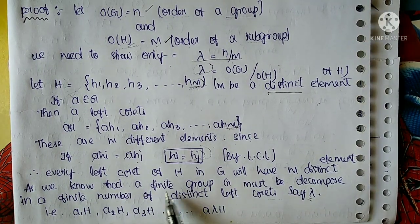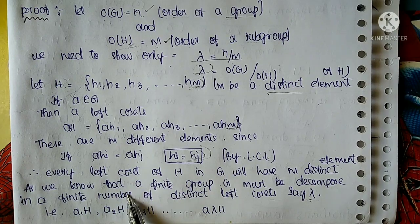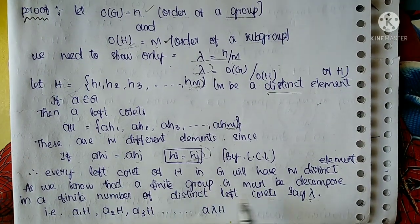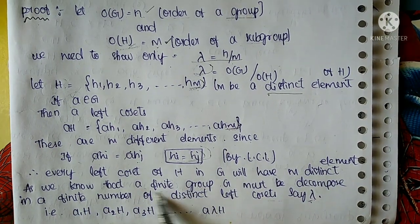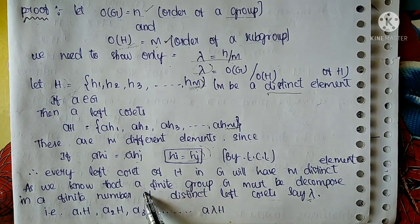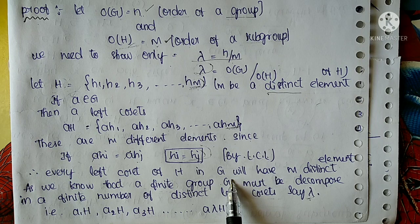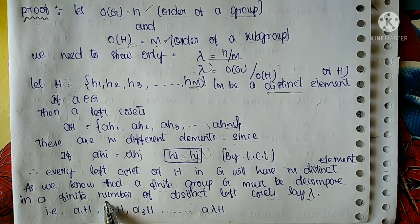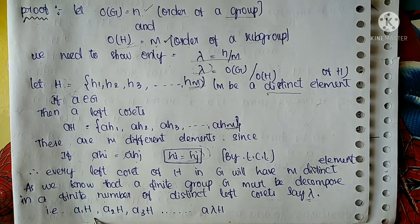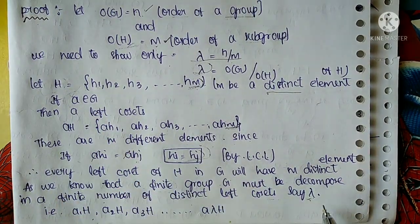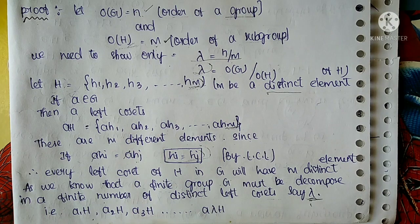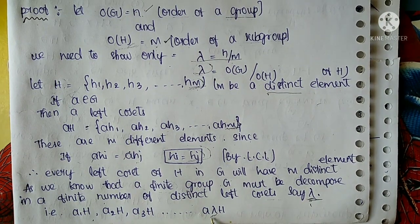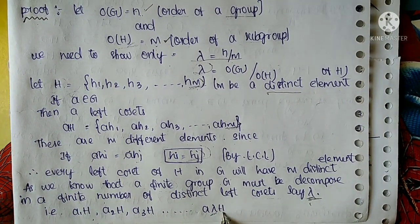As we know, a finite group G must be decomposed into a finite number of distinct left cosets. Lambda is the number of those left cosets. The left cosets are A1H, A2H, A3H, and so on up to A-lambda-H. This is an important step — you have to remember this.